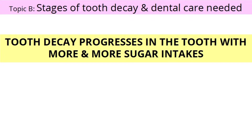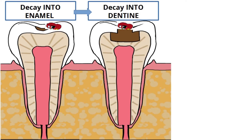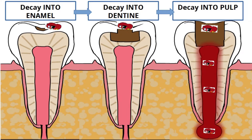Topic B: Stages of tooth decay and dental care needed. Tooth decay progresses in the tooth with more and more sugar intakes — from tooth decay into enamel, to tooth decay into dentine, to tooth decay into the pulp.